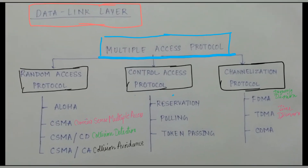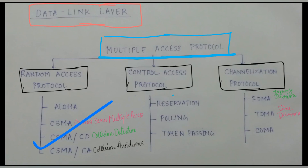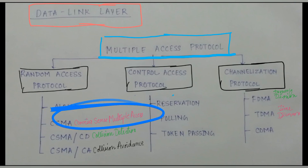So in the first layer you use error control and flow control. In the second layer, you ensure that frames travelling around don't collide, using these protocols. The advance of Aloha leads to carrier sense multiple access. That's it for the video. If you have any problems, please let me know. Thank you so much.